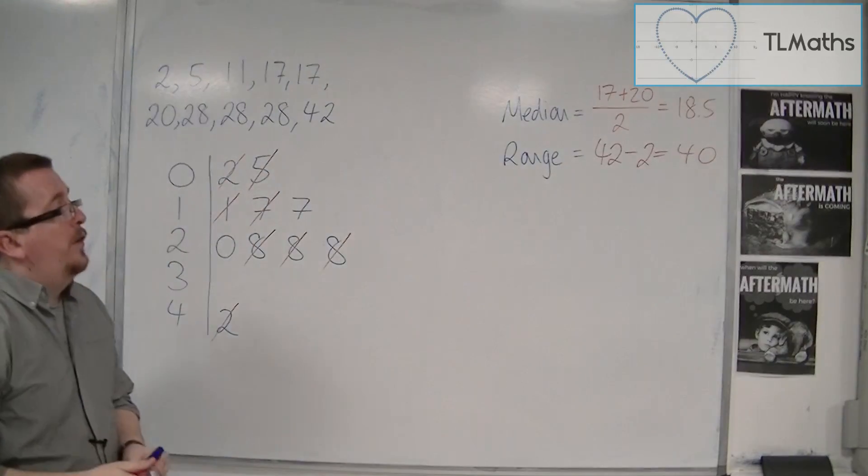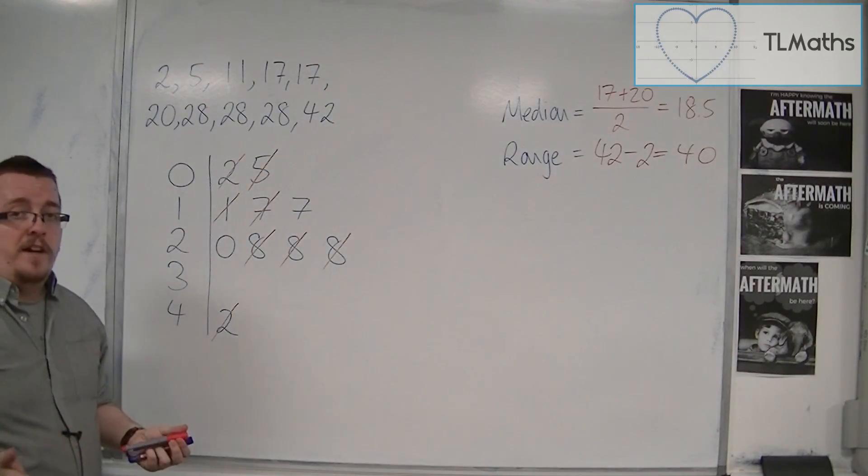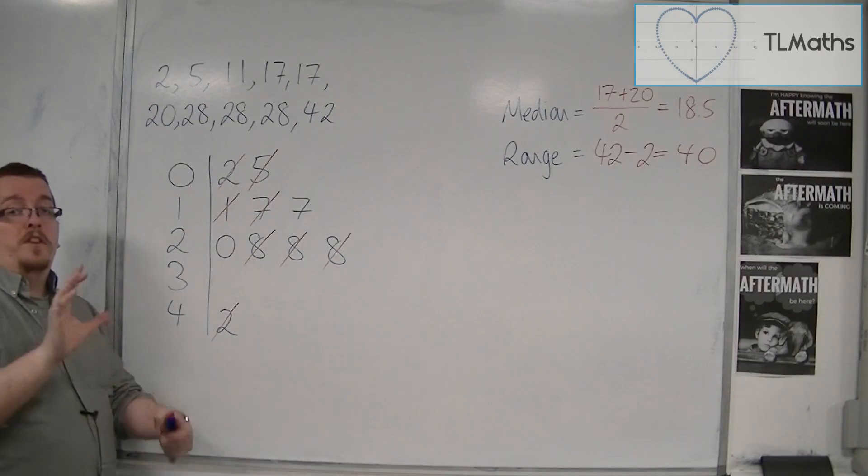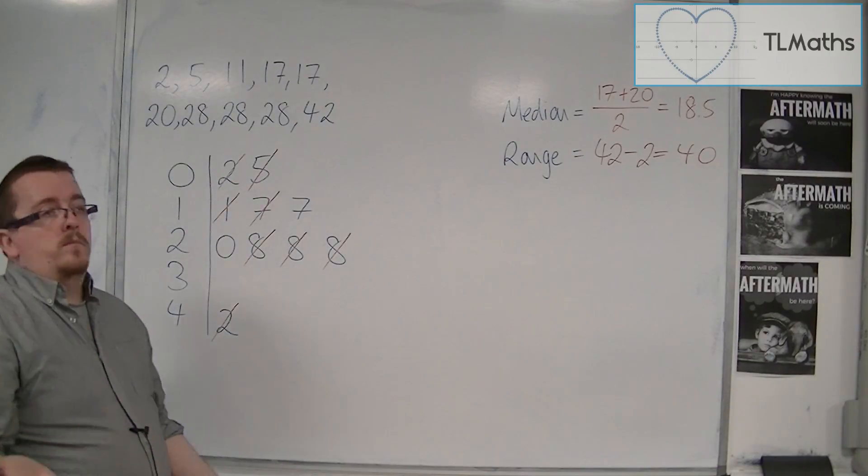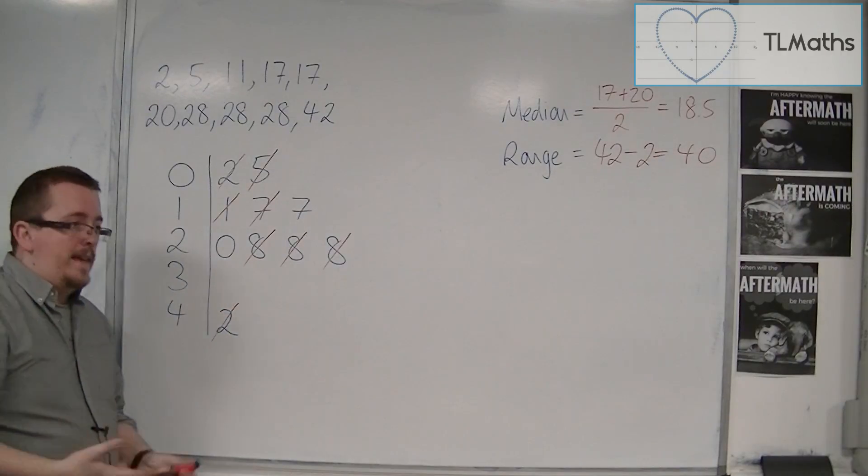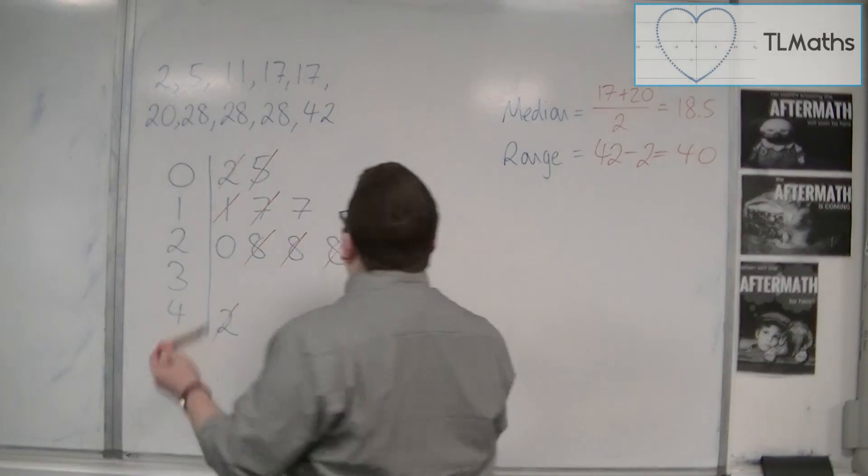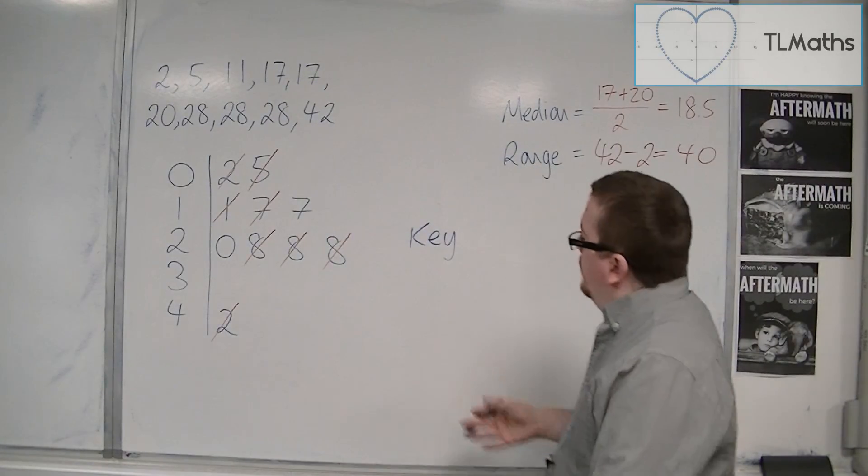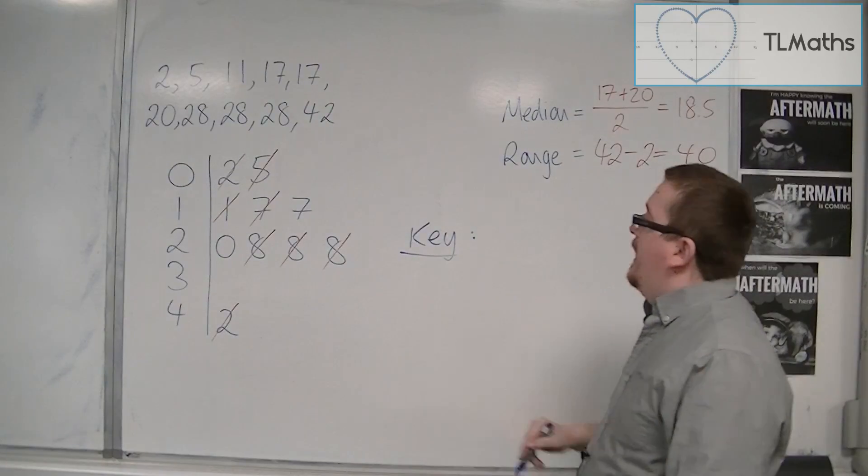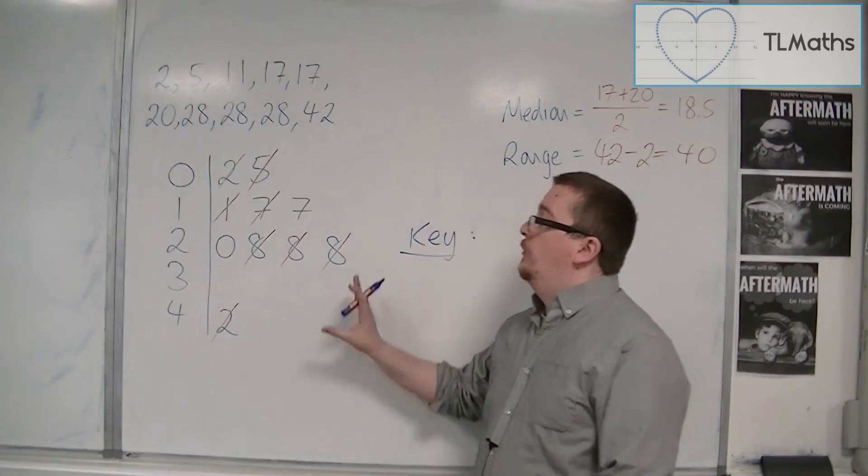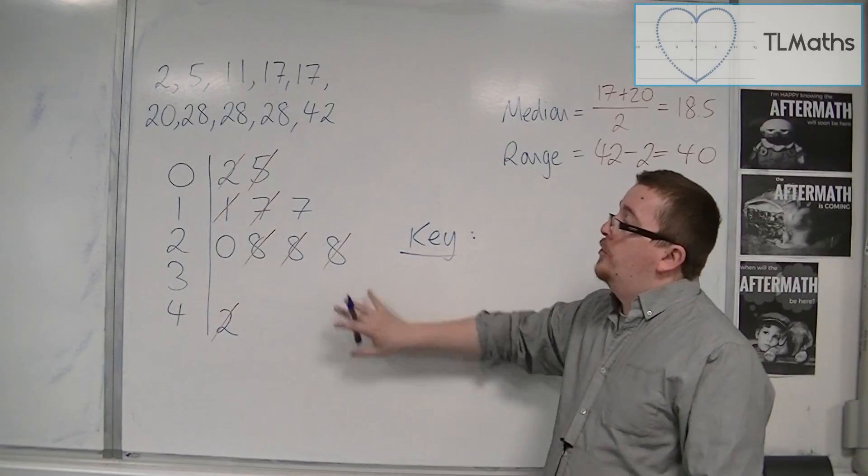So stem and leaf diagrams look like this. You could be asked for the mean and the range. The only thing that you might be shouting at me and going, Jack, you've forgotten the key aspect, is the key. With each of these, and in truth, I did forget it. So yes, here's the key.